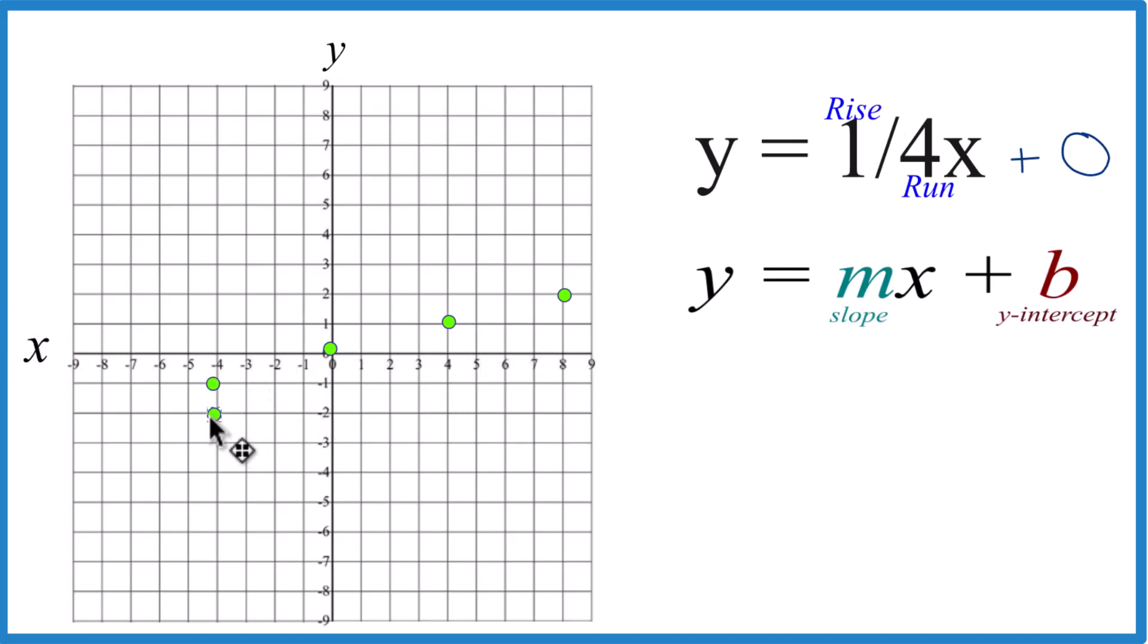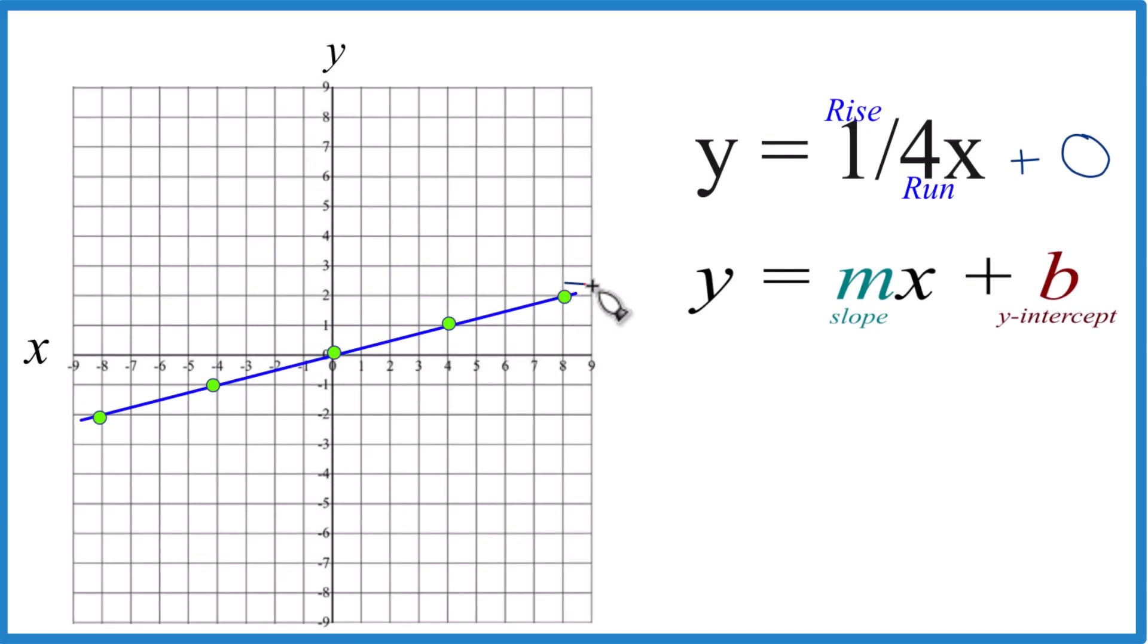Let's do one more. Down one, one, two, three, four, and that's the line for y equals 1 fourth x. Let's put a line through it. Then we can put arrows here on the end to show it goes to infinity, and that's the graph for 1 fourth x using slope-intercept form.